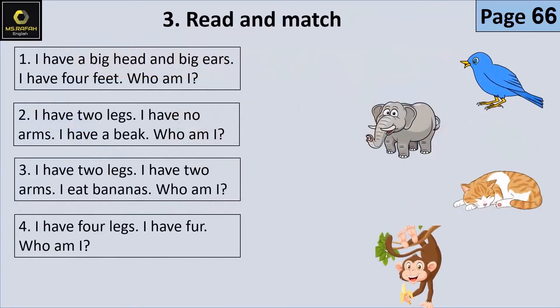Question number three: Read and match — اقرأ وصل. I have a big head and big ears — لدي رأس كبير وأذنان كبيرتان. I have four feet — لدي أربع أقدام. Who am I? — Elephant.